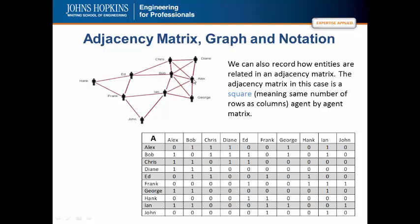You may notice in the graph that Alex is not connected to Frank. So if we look at Alex and we go over here to Frank, we will see that it is a zero. Therefore, this matrix is the same network as the graph represented here.